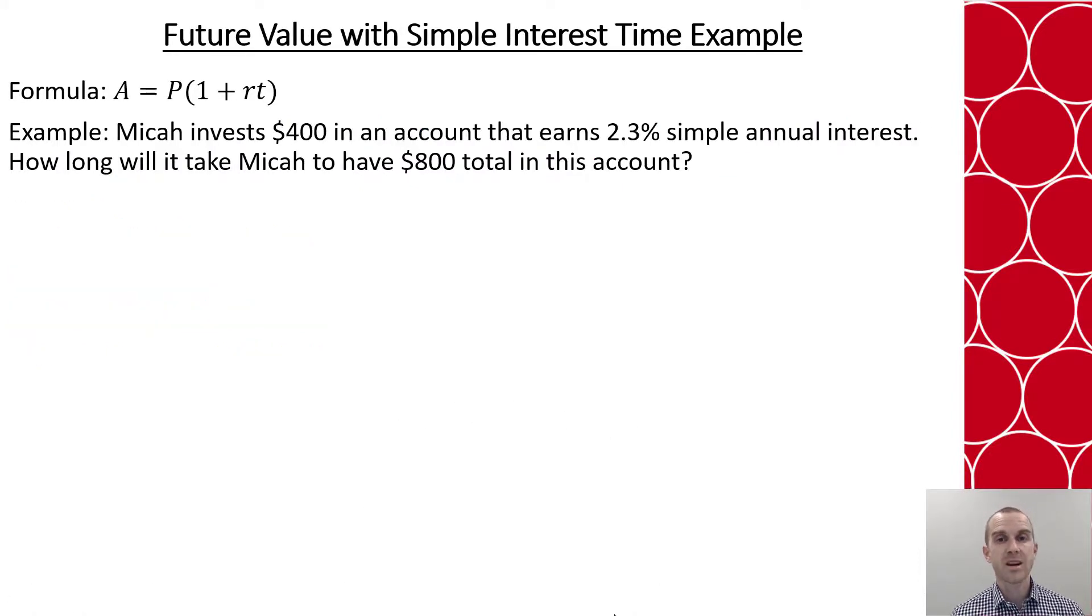Now what if we wanted to calculate for time instead of for the total value? So let's look at how that would work. Micah invests $400 in an account that earns 2.3% simple annual interest. How long will it take Micah to have $800 total in this account? So in other words, how long will it take Micah to double his money?